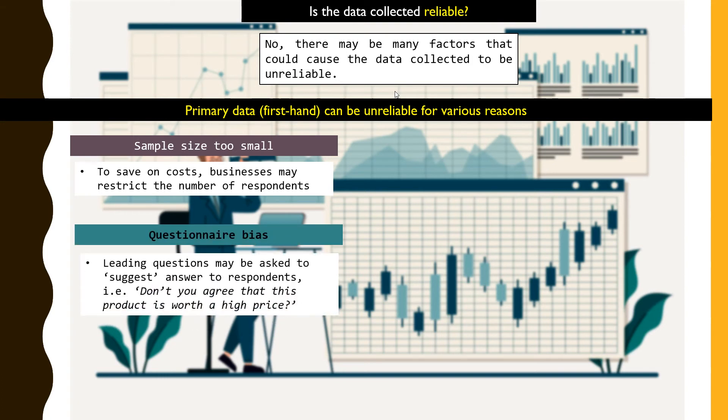There could also be questions that have a tendency of biasness in the question and how the company is putting out the questions. For example, don't you agree that this product is worth a high price? This is basically getting respondents to agree rather than to disagree or to give their own views. So these are basically elements of bias in questions.